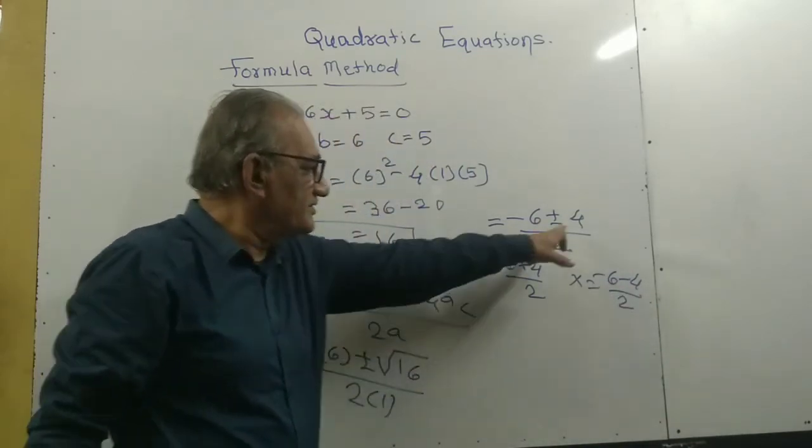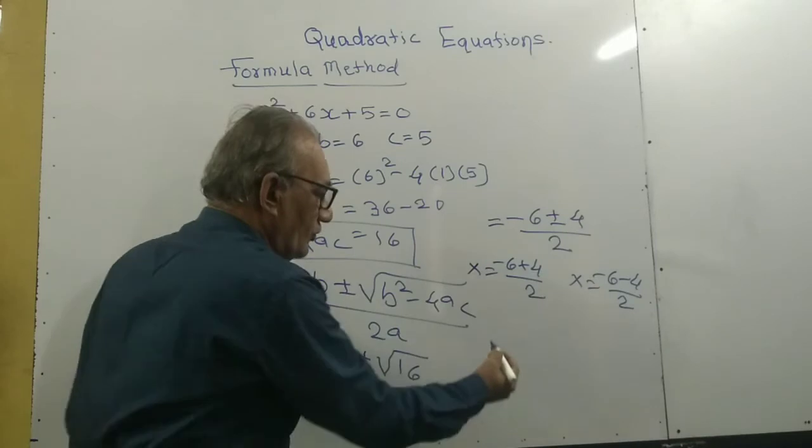Square root of 16 is 4. So we get x = (-6 ± 4) / 2.